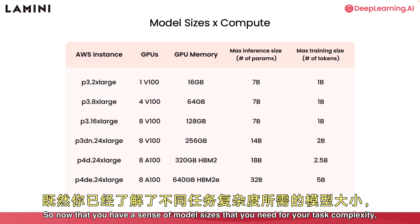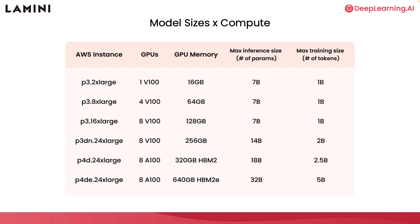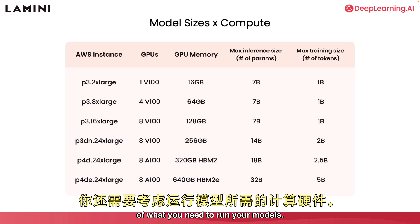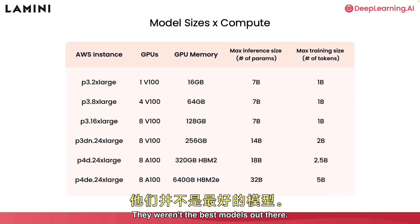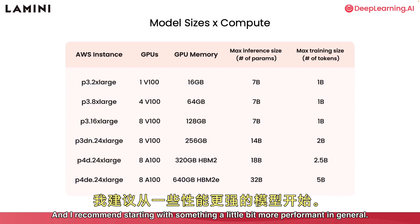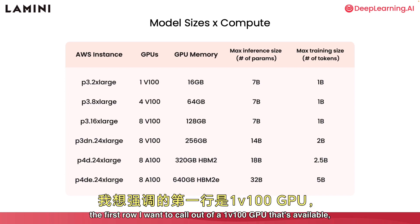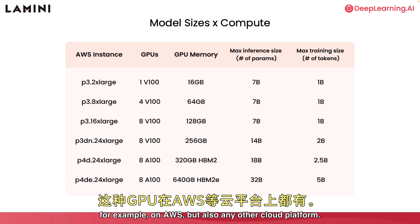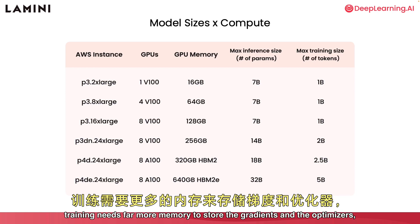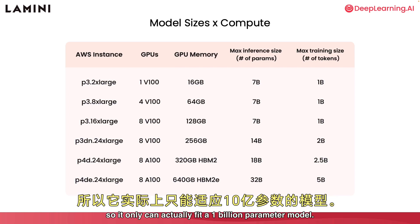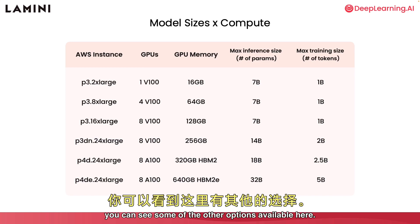Now that you have a sense of model sizes needed for your task complexity, there's also a compute requirement around hardware. In the labs, you saw 70 million parameter models running on CPU — they weren't the best. Looking at this table, a single V100 GPU with 16 gigabytes of memory, available on AWS and other cloud platforms, can run a 7 billion parameter model for inference, but for training — which needs far more memory for gradients and optimizers — it can only fit a 1 billion parameter model. For larger models, you can see other options in the table.